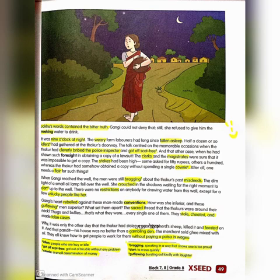When Gangi reached the well, the men were still boasting about the Thakur's past misdeeds. The dim light of a small oil lamp fell over the well. She crouched in the shadows, waiting for the right moment to dart up to the well. There were no restrictions on drawing water from this well, except for a few unlucky people like her.